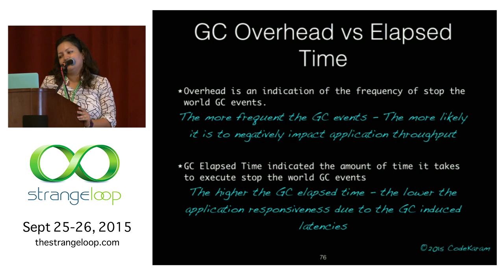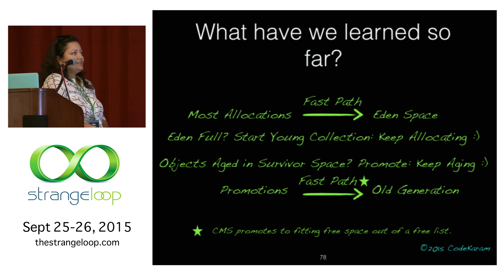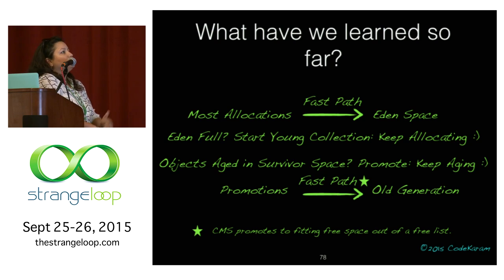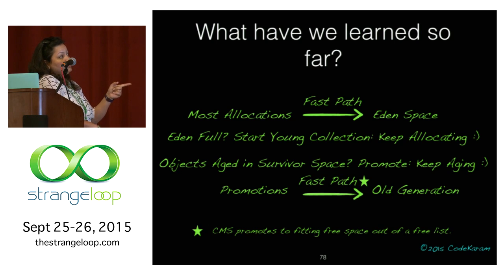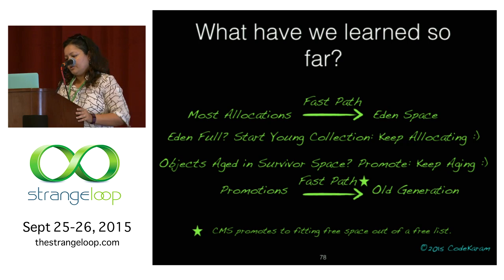We're 30 minutes in — I have 10 more minutes to summarize. Most allocations are fast path, allocated into TLABs and then Eden. When Eden is full, young collection starts; otherwise keep allocating. Once objects are aged appropriately, promote them — promotion is also fast path via local allocation buffers into the old generation. For CMS, we just promote directly into fitting free space in the free list.